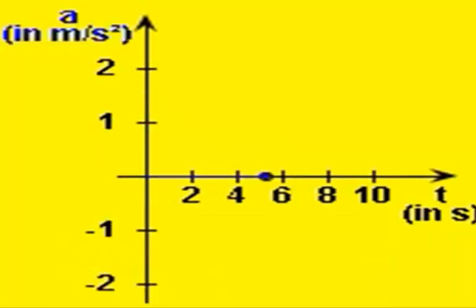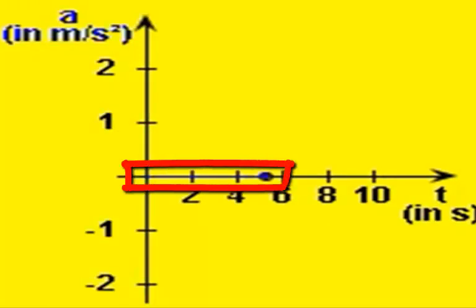It's not accelerating, because the motion is uniform. So we can see that the AT graph is a straight line at the zero level of acceleration.